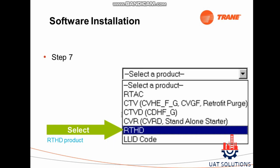Step 7: Now that all the required software are downloaded, let's start with the installation of TechView for RTHD chillers. Run the file TV7.02, select RTHD in the select product menu, and click Next.